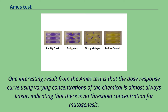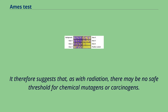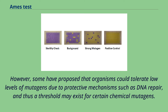One interesting result from the Ames test is that the dose-response curve using varying concentrations of the chemical is almost always linear, indicating that there is no threshold concentration for mutagenesis. It therefore suggests that, as with radiation, there may be no safe threshold for chemical mutagens or carcinogens. However, some have proposed that organisms could tolerate low levels of mutagens due to protective mechanisms such as DNA repair, and thus a threshold may exist for certain chemical mutagens.